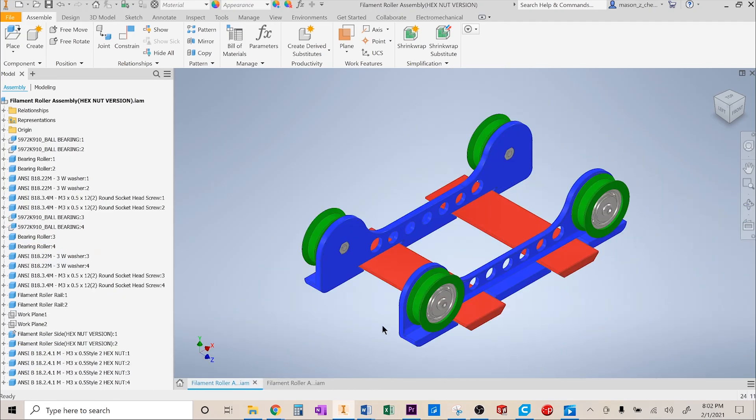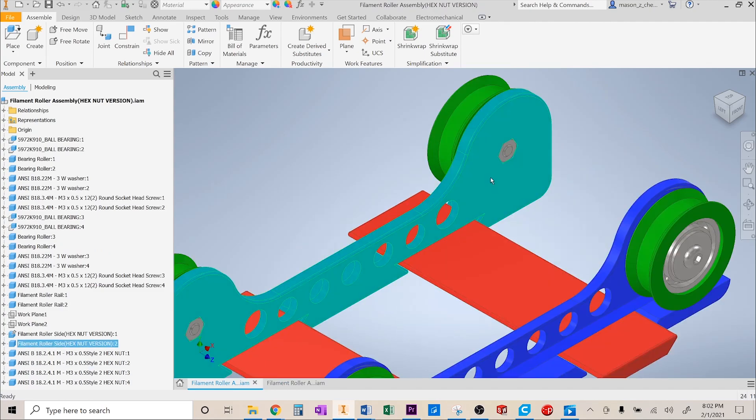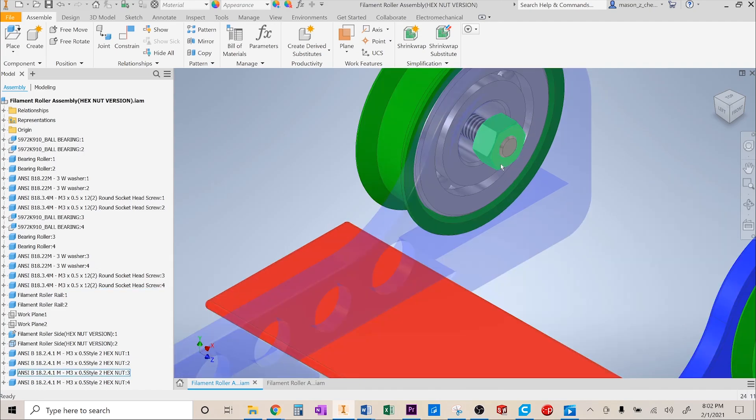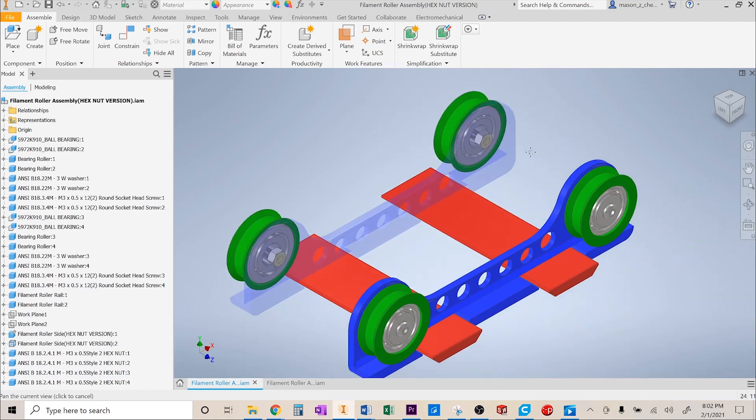Now, if we hop on over to the hex nut version, as you can see the hex nut over here, again, I'll make the side transparent. This version is a lot easier to assemble as you don't need a soldering iron or any sort of heating element. All you do is insert an M3 hex nut into the hex hole, and you should be good to go.